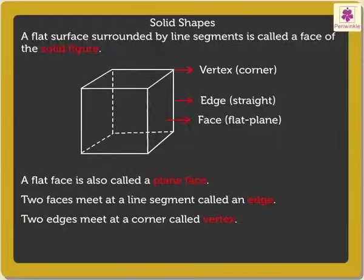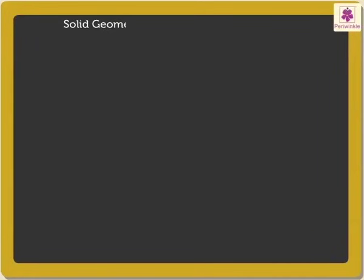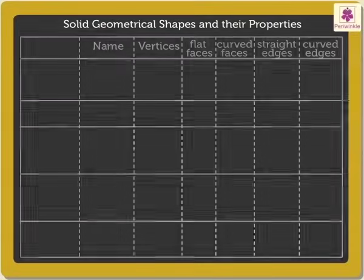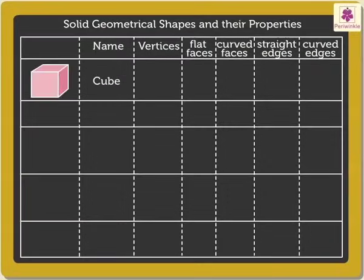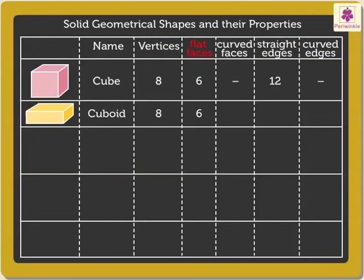Now let's look at some solid geometrical shapes and their properties. A cube has 8 vertices, 6 flat faces, and 12 straight edges. A cuboid has 8 vertices, 6 flat faces, and 12 straight edges.